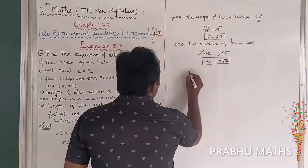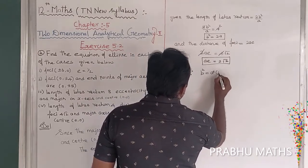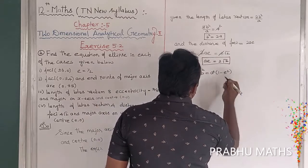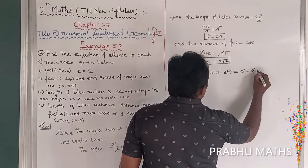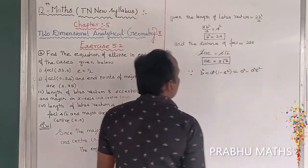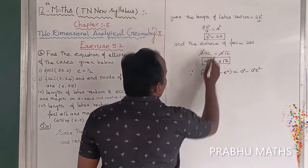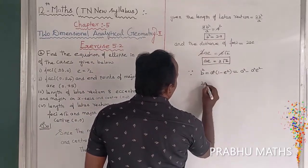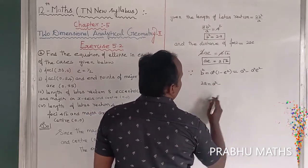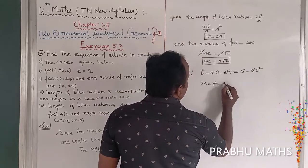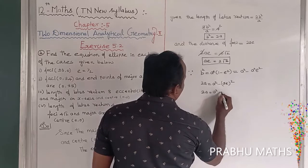We know the formula b² = a² - a²e². Now replacing the value of b² with 2a: 2a = a² - a²e², which means 2ae = a² minus (ae)².